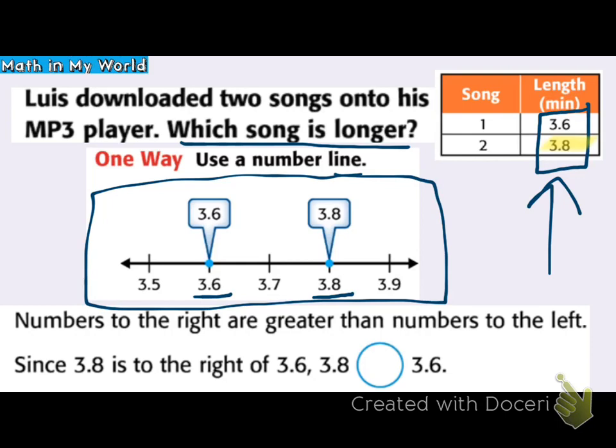Step three, we can solve. Since 38 tenths is to the right of 36 tenths, 38 tenths is greater than 36 tenths. It makes sense — it's reasonable because 8 is larger than 6, so I know I have the right answer.